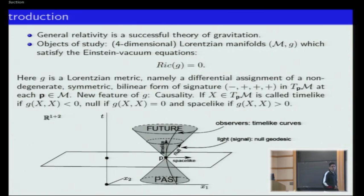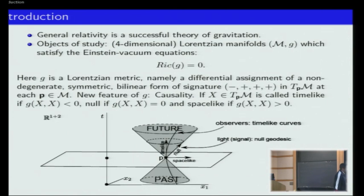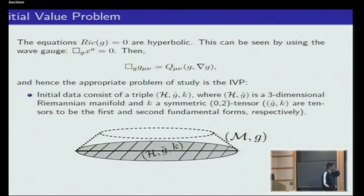In the Riemannian case, we only have pluses. In the Lorentzian case, we have one direction with a minus, which simply means that there exist vectors whose norm is negative. At each point in the tangent space, vectors outside the cone have positive norm, vectors on the cone have zero norm, and vectors inside the cone have negative norm. These are called timelike, null, and spacelike vectors respectively. This is the basic notion we need from Lorentzian geometry.